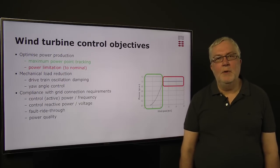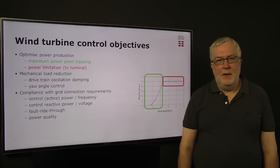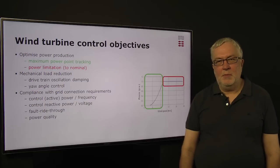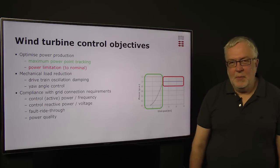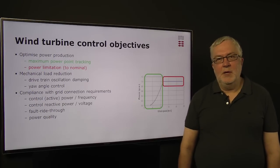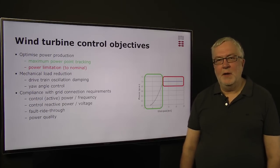This is called fault ride through. And also to ensure that the power quality that we get out from the wind turbine and wind power plants is good. This can be harmonic emissions from the wind turbines and it can also be flicker emission.